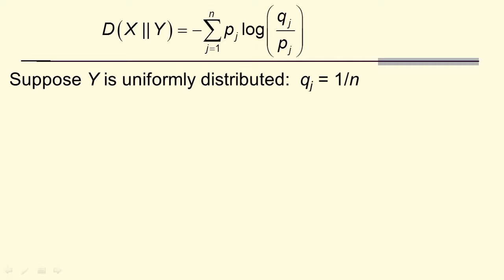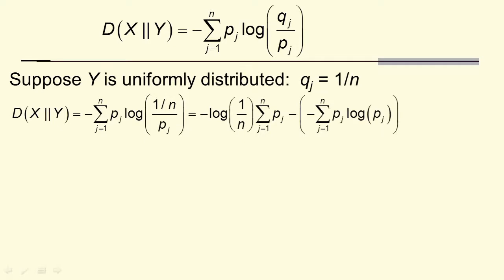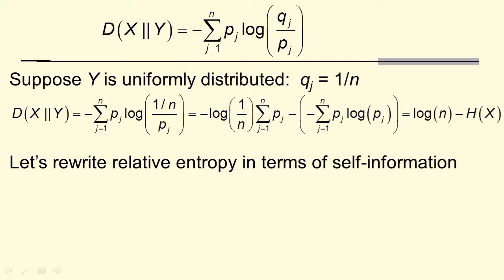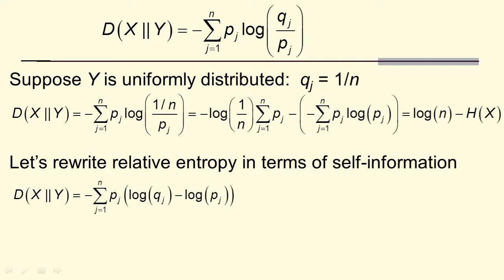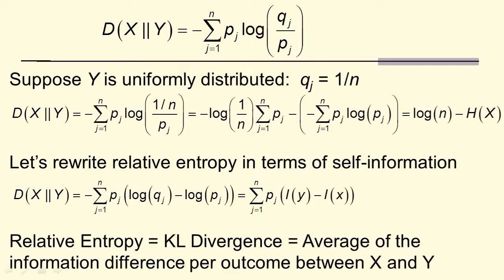If y is uniformly distributed, then q_i would be 1/n. A little bit of algebra shows we would get the negative log of 1/n times the sum of the p_j's, but that's a probability distribution so it adds up to 1. And so we get log(n) minus the entropy of x. Therefore we can see that H(x) will always be equal to log(n) minus the KL divergence. Rewriting relative entropy in terms of self-information, it's the sum p_j [I(y) − I(x)], so it's the average information difference per outcome between x and y.